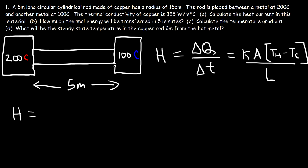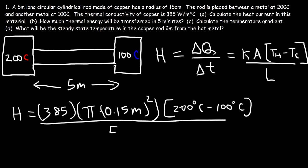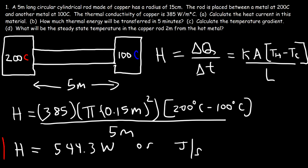We have everything we need. The thermal conductivity of copper is 385 watts per meter per Celsius. To calculate the area we use pi r squared; the radius is 15 centimeters, or 0.15 meters, squared. The temperature difference is 200 minus 100 Celsius, and the length is 5 meters. The heat current comes out to 544.3 watts, or joules per second. That's the answer for part A.